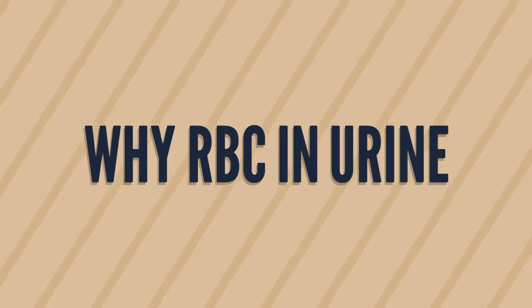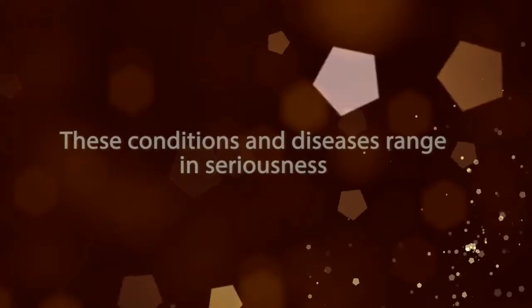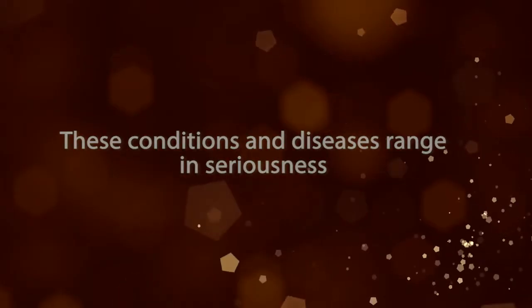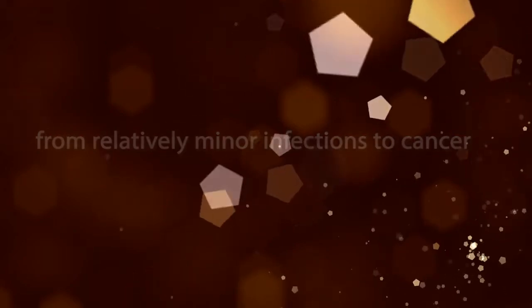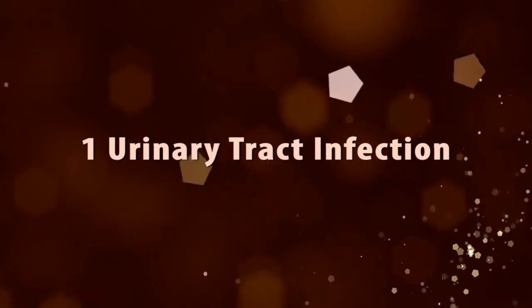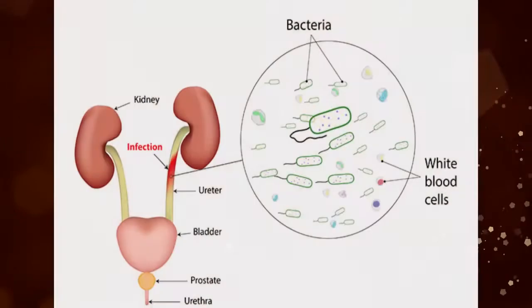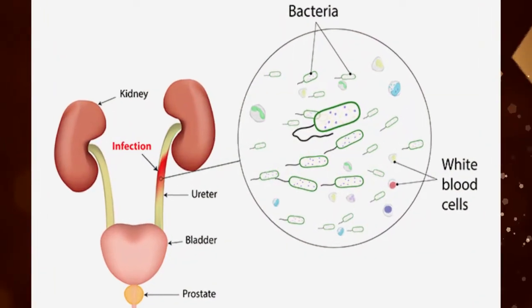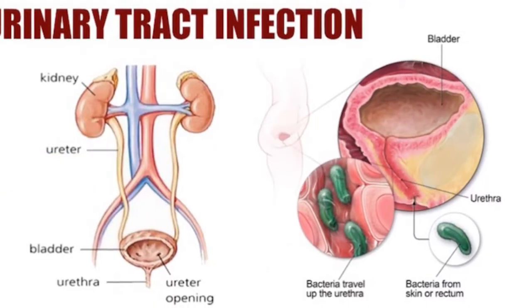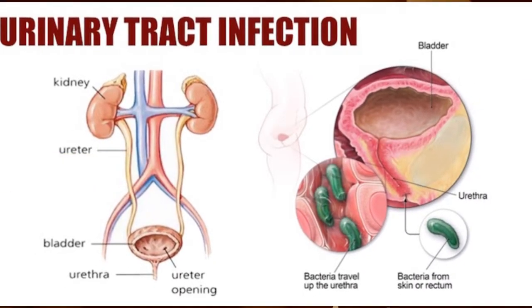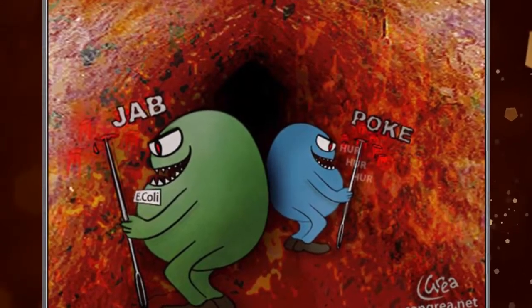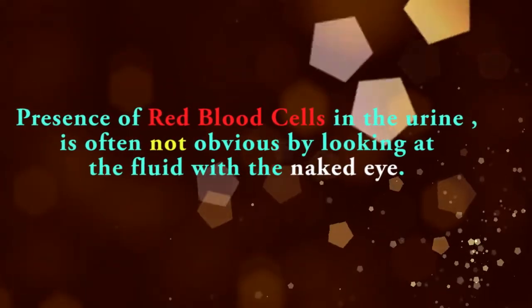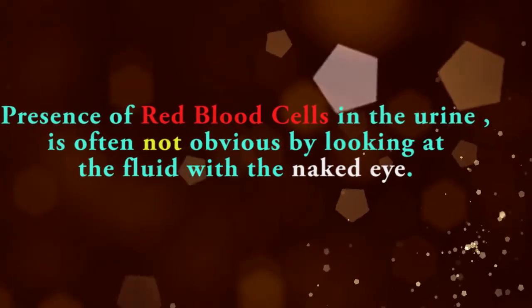Why are red blood cells found in urine? These conditions and diseases range in seriousness from relatively minor infections to cancer. Urinary tract infections are a leading cause of finding red blood cells in the urine. The red blood cells typically indicate inflammation of the lining of the urinary tract due to the infection. With a UTI, the presence of red blood cells in the urine is often not obvious by looking at the fluid with the naked eye.